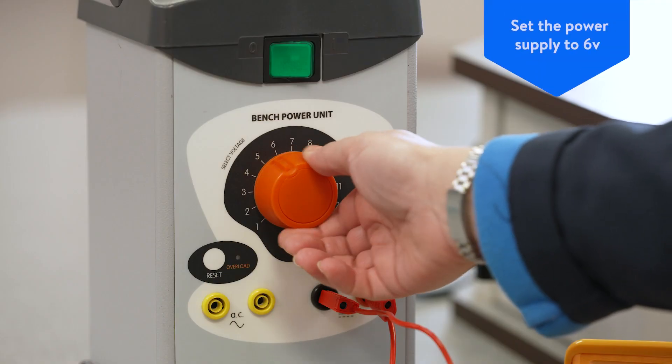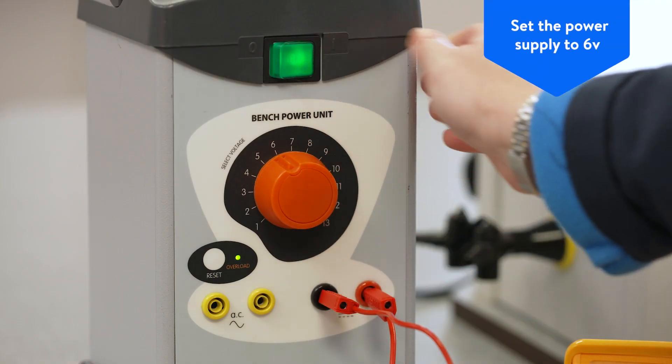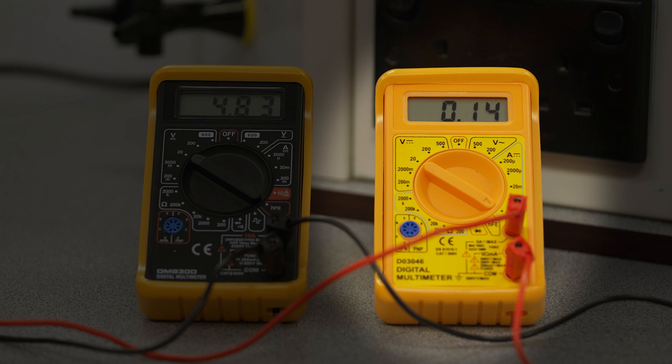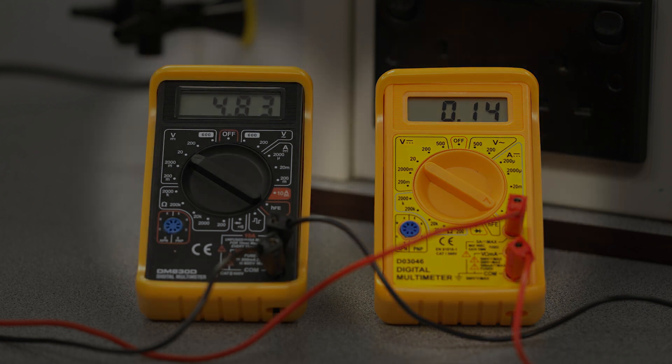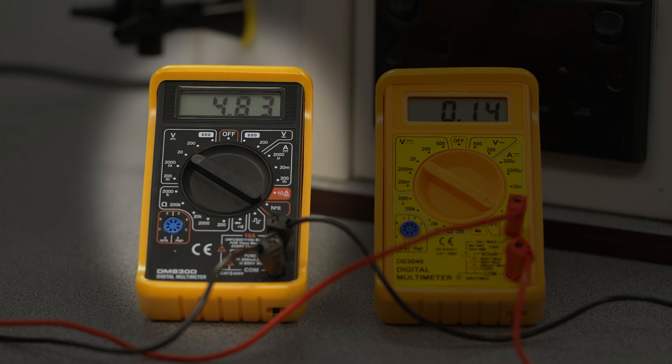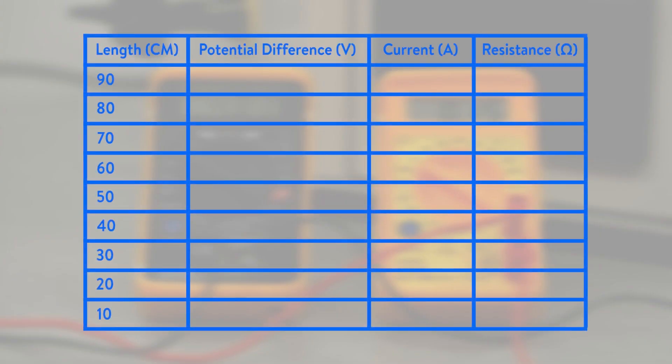Set the power supply to 6 volts and switch on. Students should record the current from the reading on the ammeter and the potential difference (voltage) from the voltmeter, and record these in a suitable table.